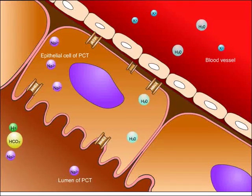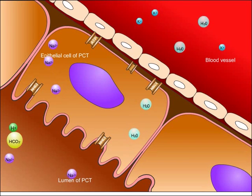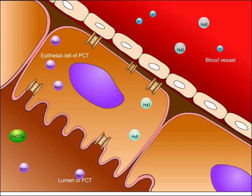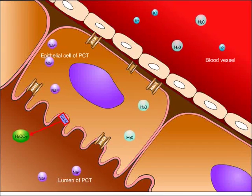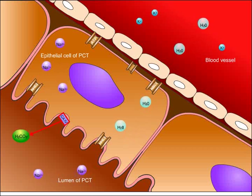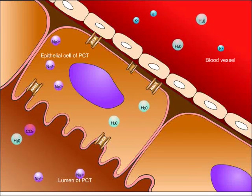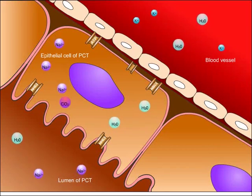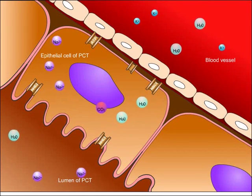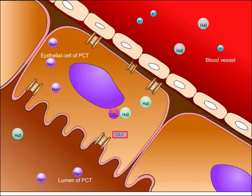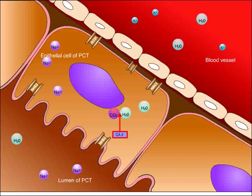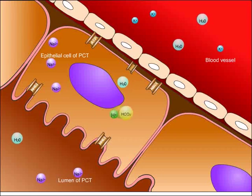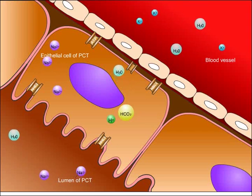Bicarbonate is unable to move from the lumen across the proximal tubule epithelial cells. In the lumen, hydrogen ions bind to bicarbonate to form carbonic acid. Carbonic anhydrase IV then cleaves carbonic acid to form water and carbon dioxide, which is able to easily diffuse across the membrane into the epithelial cell. Inside the epithelial cell, the opposite occurs: carbonic anhydrase II forms carbonic acid by binding water and carbon dioxide. Carbonic acid will then dissolve to form hydrogen and bicarbonate.